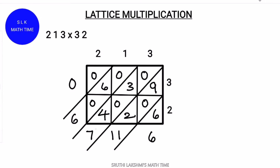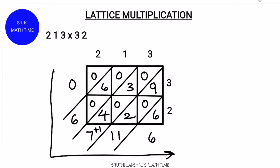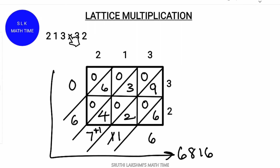So 7 plus 1 is 8. This is the answer: it's 6, then 7 plus 1 is 8, and we write this 1 and 6. So 213 into 32 is 6816.